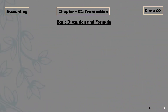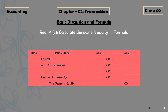For requirement C — how to calculate owner's equity — here is the formula to memorize: start with opening capital, then add all income accounts, then subtract all expense accounts. That gives you the total owner's equity at the end of the accounting period.